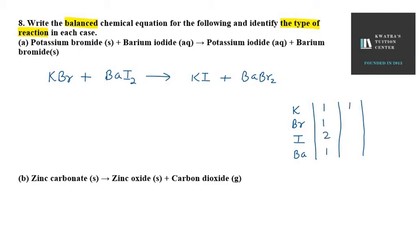And on the right hand side, K is 1 again. I is 1. Barium is 2. And I is 1. So now you can see that barium and iodine are not balanced, so we need to make them balanced.